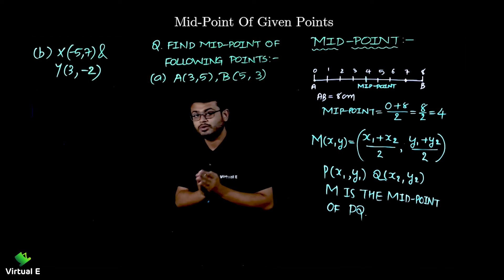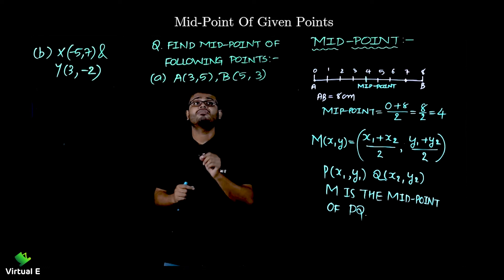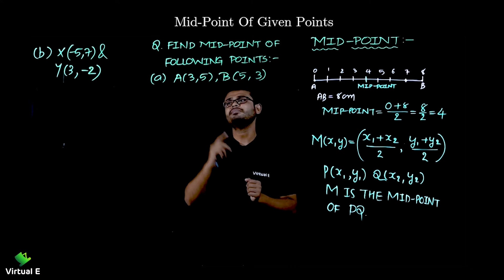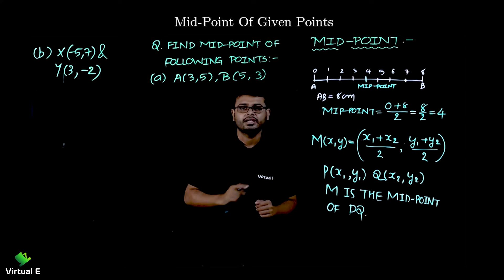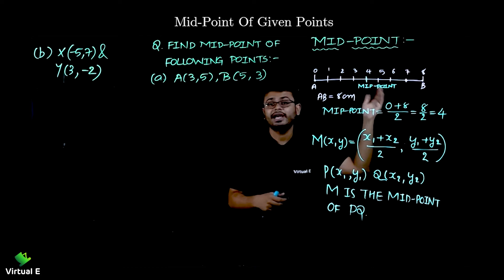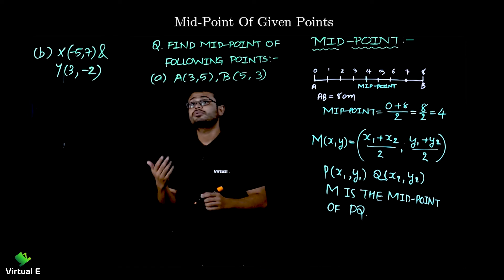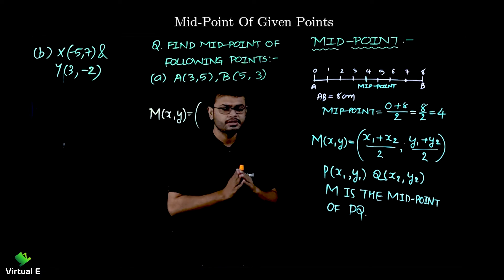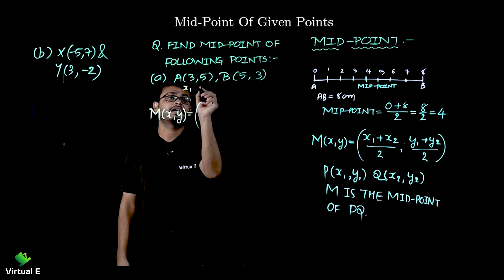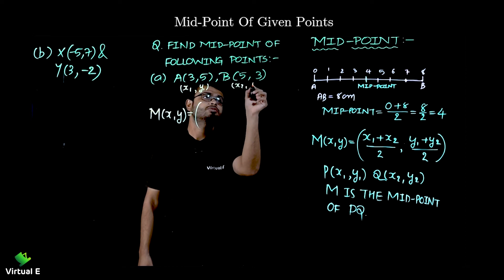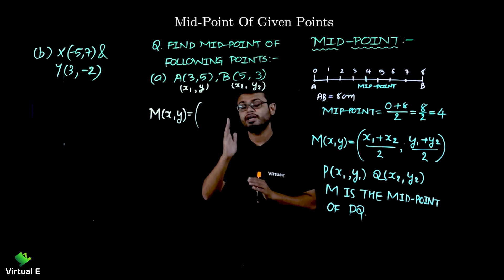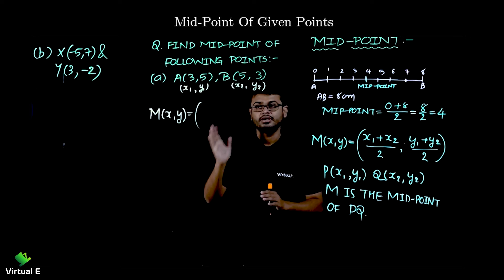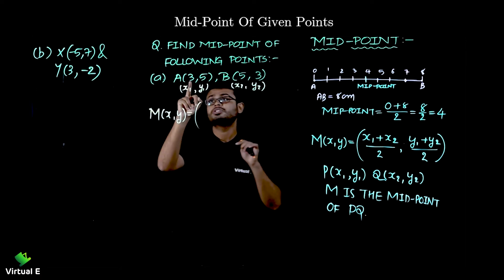Let's start with the first example: find the midpoint of A(3, 5) and B(5, 3). You can even try it on your own and cross-check. Let M = (x, y). I'm labeling A as (x1, y1) and B as (x2, y2). If you're getting confused about which is x1 and y1, please write it down during your calculation so you don't misplace the values.